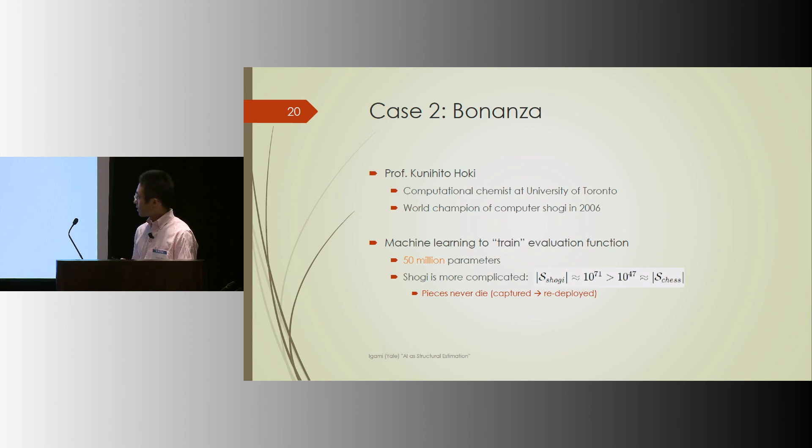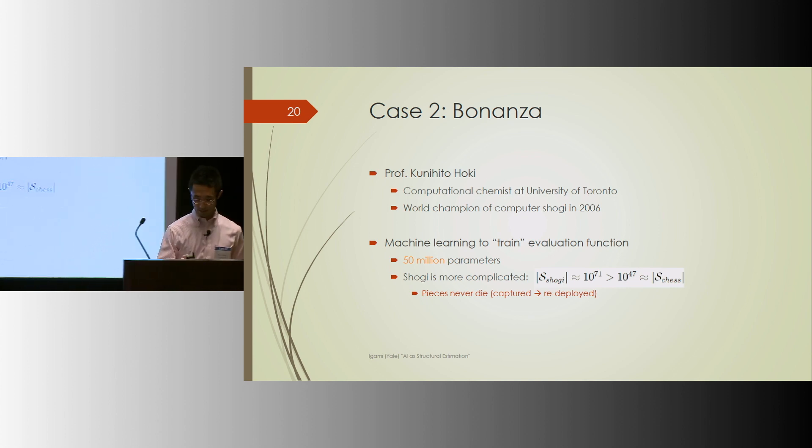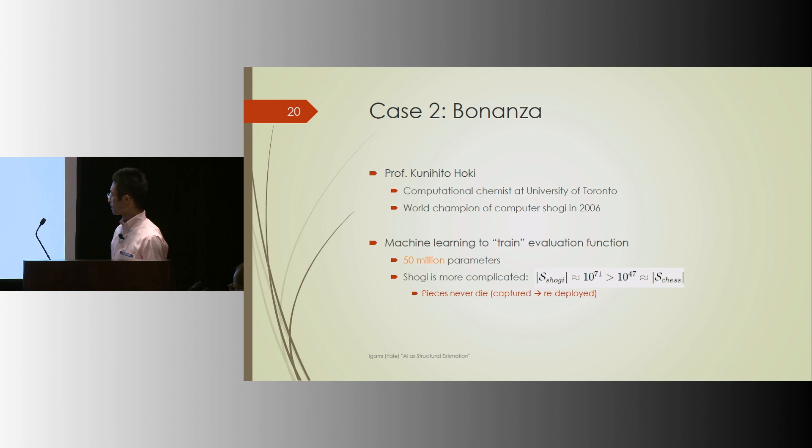Now, he revolutionized the computer Shogi programs by introducing machine learning, like data-driven way to come up with the parameter values. The way he resorted to estimation instead of calibration is because he got 15 million parameters. And the main reason is Shogi is more complicated than chess. That's because in chess, captured pieces are dead. But in Shogi, pieces never die. They get captured and can be redeployed on the enemy side. That complicates the state space.